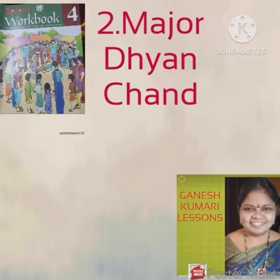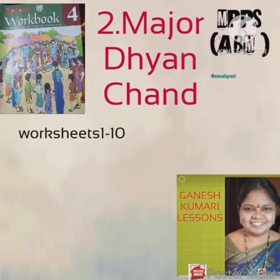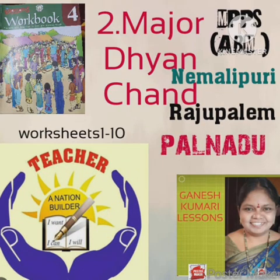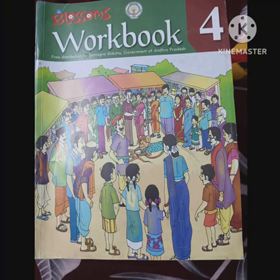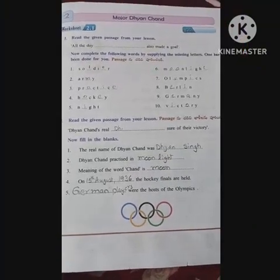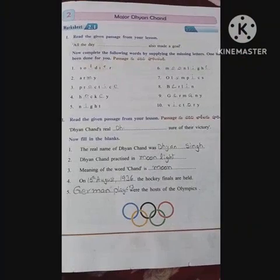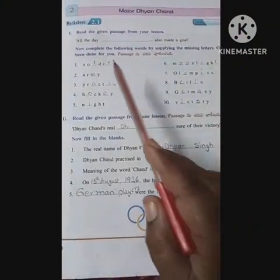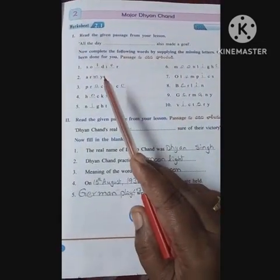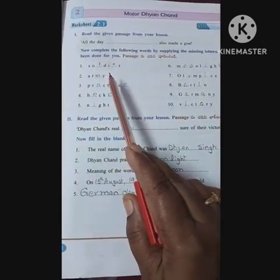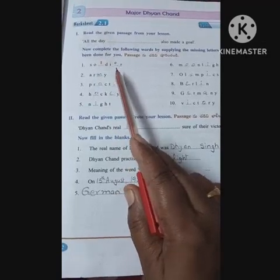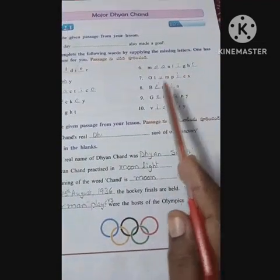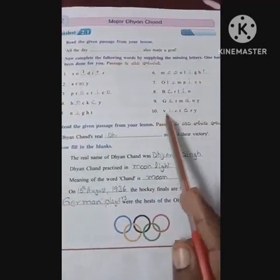Welcome to English Textbook Worksheet No. 2.1. After reading this textbook, you have to fill in the blanks: soldier, army, practice, hockey, night, moonlight, olympics, berlin, germany, victory.